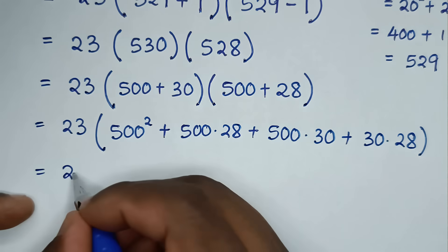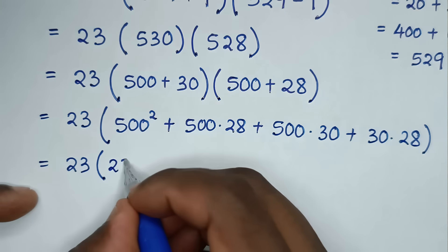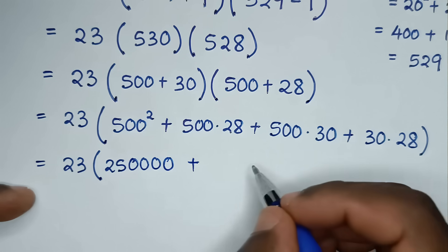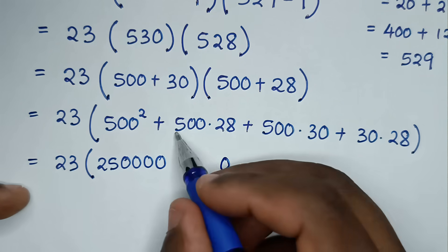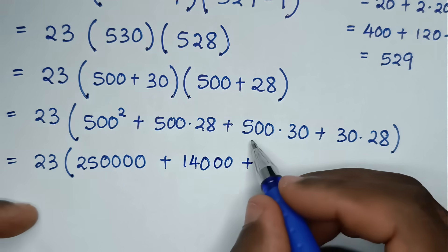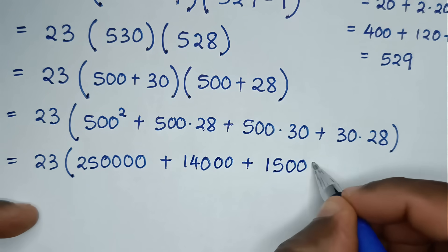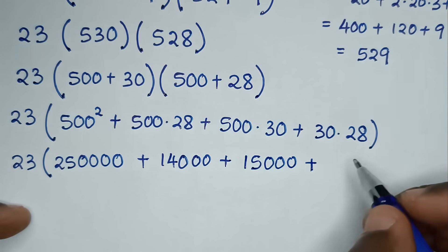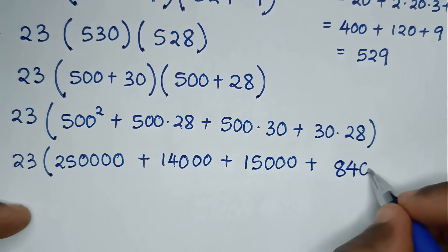Then it will be equal to 23 bracket. Here 500 squared is 5 times 5 which is 25, then 2 zeros squared gives 4 zeros, so 250,000. Then plus 28 times 500: 5 times 8 is 40, carry 4; 5 times 2 is 10 plus 4 is 14, so 14,000. Then plus 500 times 30 is 15,000. Then plus 30 times 28: 3 times 8 is 24 carry 2; 3 times 2 is 6 plus 2 is 8, so 840.